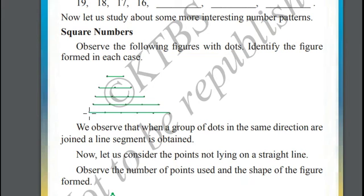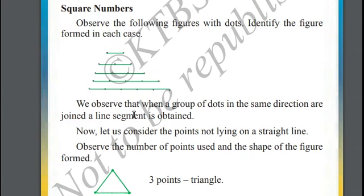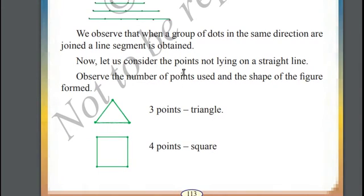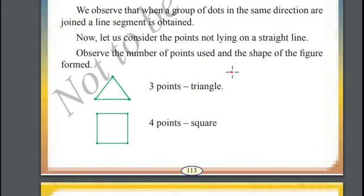In the fifth example, we have one, two, three, four, five, six - six dots. All dots are connected with a line segment. So we can conclude that when a group of dots are in the same direction and they are connected, this forms a straight line. This is about straight line where dots are in the same direction. Now let's see what if the dots are not in the same direction.